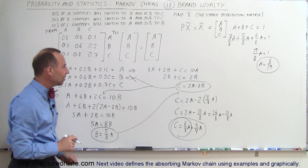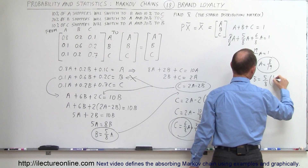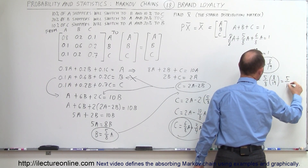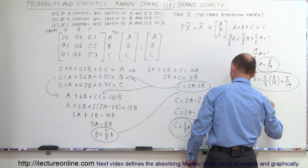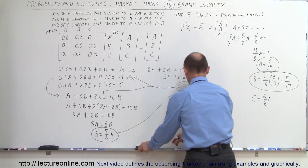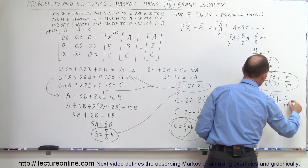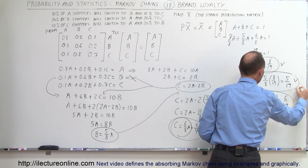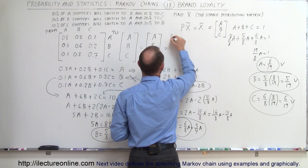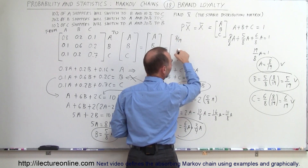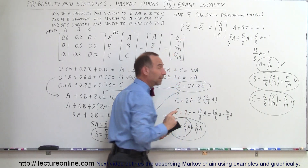Finding B and C is now straightforward. B = (5/8) × (8/19) = 5/19. And C = (6/8) × (8/19) = 6/19. So the stable distribution matrix is: A = 8/19, B = 5/19, C = 6/19. We can do a quick check: 8 + 5 + 6 = 19, so they add up to 1. Store A gets 42.1% of customers.